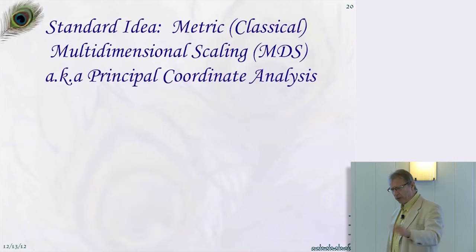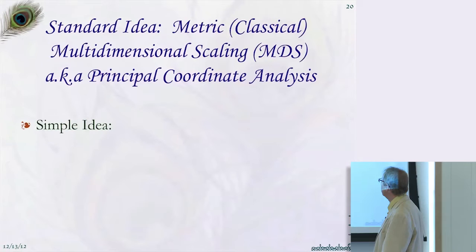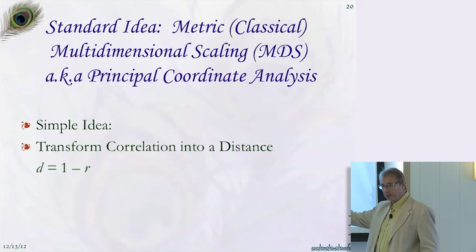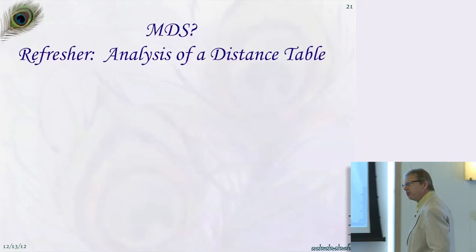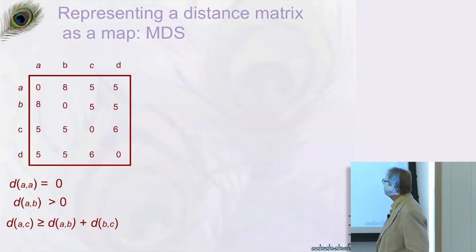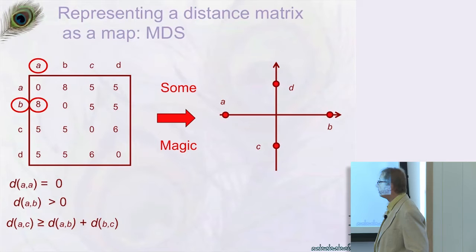The standard idea when you have a correlation matrix is multidimensional scaling, or MDS, also known to biologists as principal coordinate analysis. The simple idea is you transform the correlation into a distance — distance equals one minus the correlation, going from zero to two at maximum. Then you apply MDS. MDS goes back to the late 1930s: you want a map so that the distances in the table match the distances on the map.